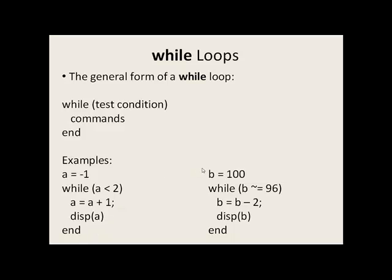In the second example, b is equal to 100. We come to our while loop and our test condition: 100 not equal to 96, this is true. So we subtract 2 from b, making it 98, and display 98 to the screen. Back to the top: 98 not equal to 96, true — subtract 2, making it 96, display 96. Back to the top: 96 not equal to 96, this is false. So we skip those commands and our code continues on.